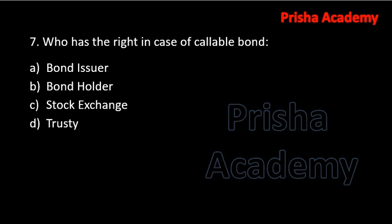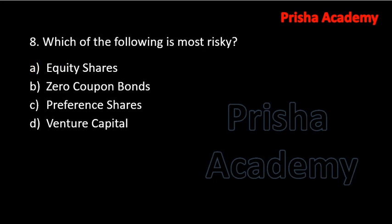Next question: who has the right in case of callable bonds — bond issuer, bondholder, stock exchanges, or trustees? The answer is bond issuer. Next question: which of the following is most risky — equity shares, zero coupon bonds, preference shares, or venture capital? Out of these, only venture capital is the most risky.